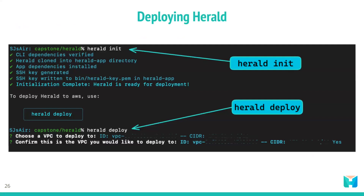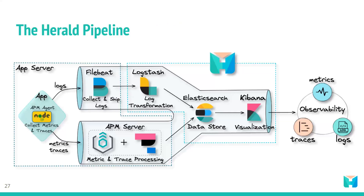Setting up the ELK stack can be challenging, particularly for developers new to observability. The configuration details involved in setting up each component of the stack for complete observability can be overwhelming. However, Herald simplifies the process by abstracting away the complexity, providing an effortless deployment of the stack with just a few commands. The Herald pipeline encompasses the main components required to achieve observability: data collection and shipment, data processing and transformation, data storage, and data visualization.